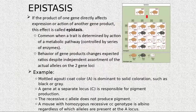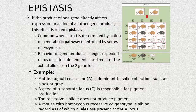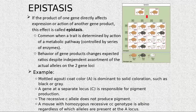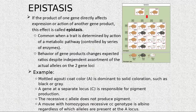Epistasis is when the product of one gene directly affects the expression or action of another gene product. It's common when a trait is determined by action of a metabolic pathway — meaning they have a series of steps involved.